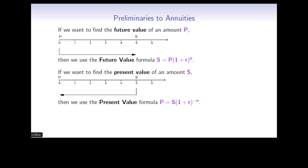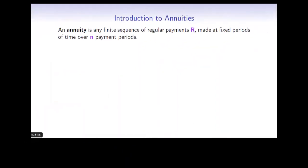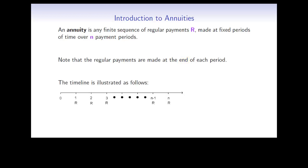Armed with these formulas, we can look at what happens with annuities. An annuity is any finite sequence of regular payments R made at fixed periods of time over n payment periods. We will assume that all the regular payments are made at the end of each period. Here are n periods, and the payments are being made at the end of each period in regular amounts of R.